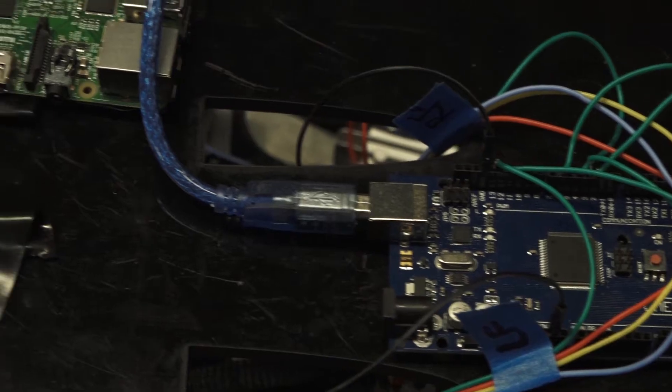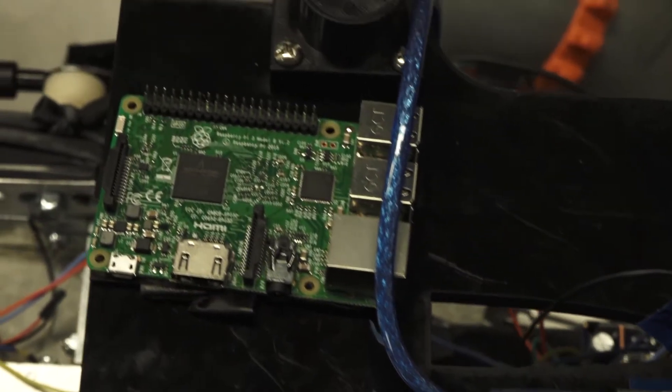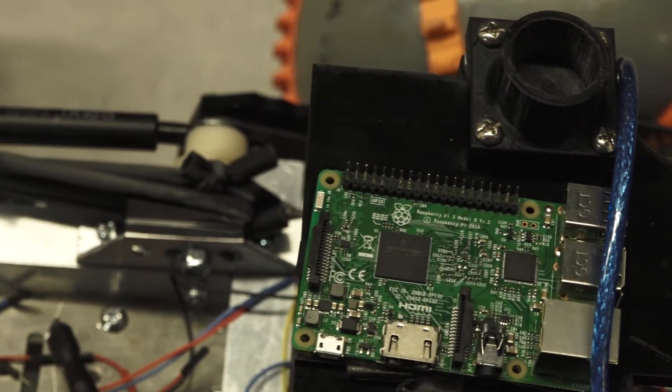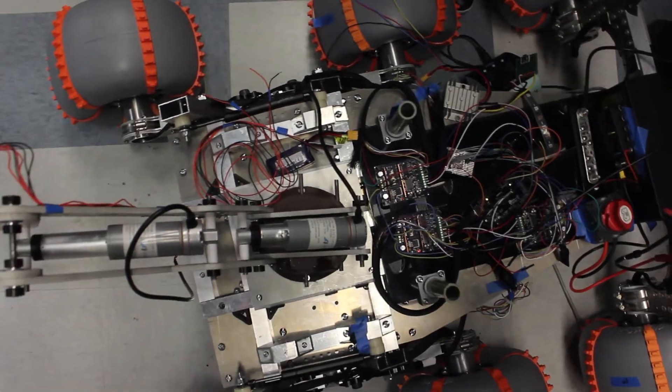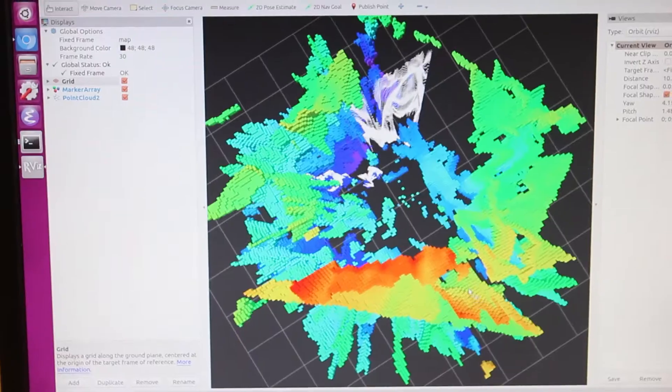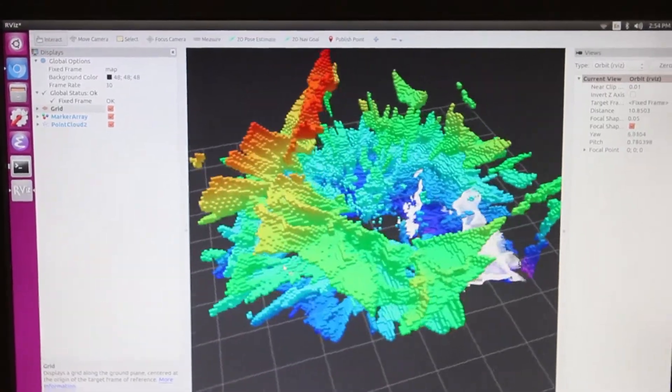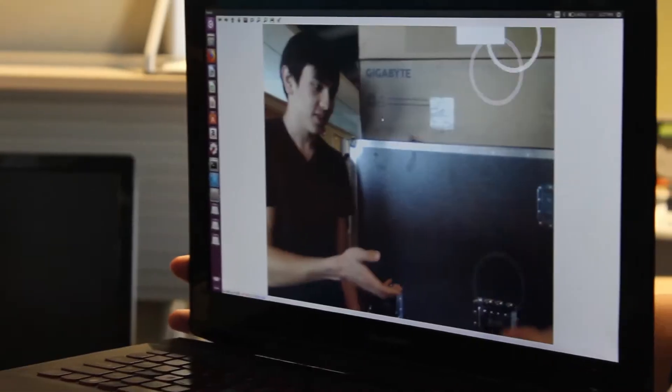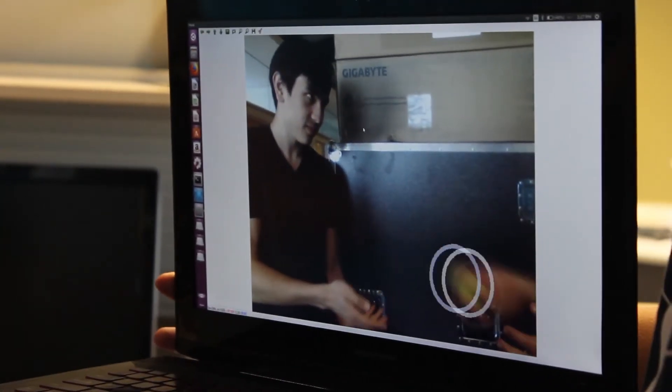The brains of our rover are an NVIDIA Jetson TX2 and a Raspberry Pi 3, which are networked to act as a single system using ROS. The NVIDIA Jetson has a powerful GPU that gives us the ability to drive autonomously, using cutting-edge environment mapping and navigation techniques to actively plan routes that avoid obstacles.